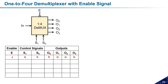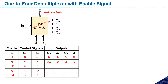This enable is an active-low enable, so the demux is enabled when logic low (0) is provided to the enable. With enable = 0 and two control signals, there are four combinations: 00, 01, 10, and 11. If S1S0 = 00, input is transferred to O0, all others zero; if 01, input goes to O1; and so on — giving us the complete truth table.